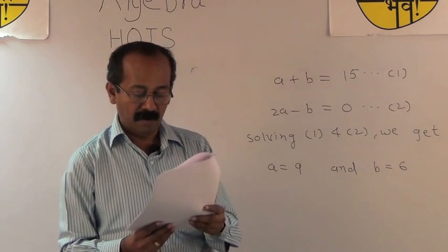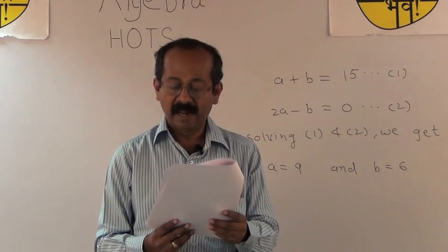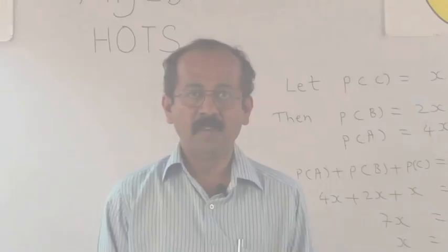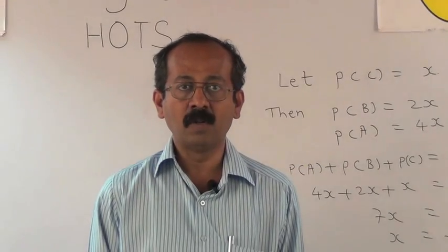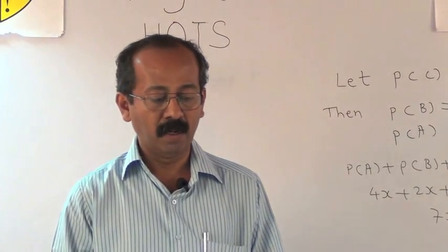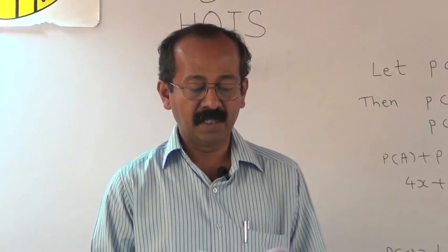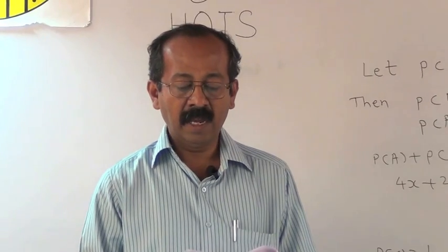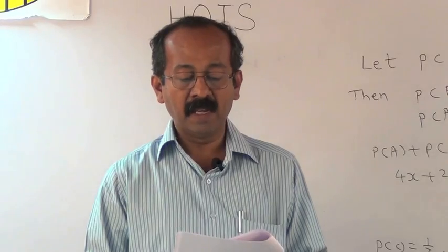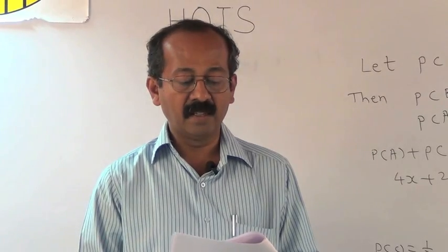So 9 liters of liquid from the first vessel and 6 liters of liquid from the second vessel should be drawn. We have given solved examples in Lok Satya Jashashvi before. Here we will take one more example. Three horses A, B, and C are in a race. A is twice as likely to win as B, and B is twice as likely to win as C. What are their probabilities of winning?